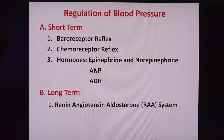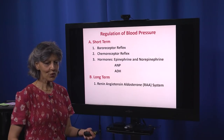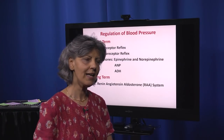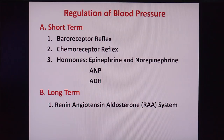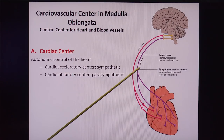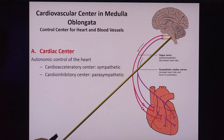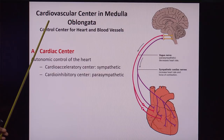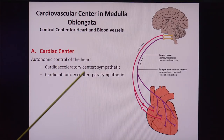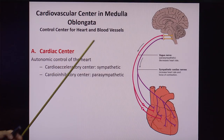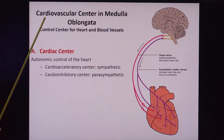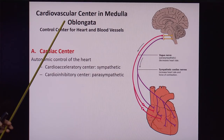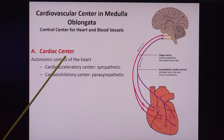In order to understand how blood pressure works or who controls the heart and the blood vessels, we're going to look at the neural control of those organs. Within the medulla oblongata of the brain, we have the cardiovascular center. It controls the heart and the blood vessels. The word has two parts: cardio, referring to the cardiac center, and vascular, referring to the vasomotor center of the blood vessels.